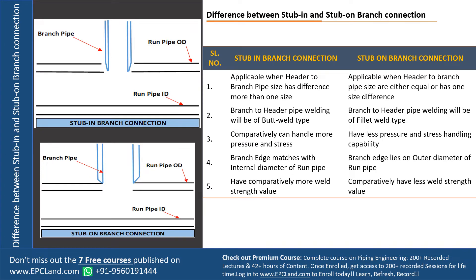The main and top-most difference is that stub-in branch connections are applicable when the branch pipe size has a difference of more than one size from the header. Stub-on is when the size difference between header and branch is equal or not more than one size difference. So this is the first and top-most criteria to select stub-in or stub-on: when the difference is more than one size, we go for stub-in; if it is equal or one size difference, we go for stub-on.